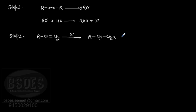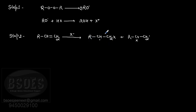First possibility: X joins at the CH2 end and the free radical forms on the other carbon - this gives a secondary free radical. Second possibility: X joins at the other end and the free radical forms on CH2 - this gives a primary free radical. We know that secondary free radical is more stable than primary free radical, so the secondary free radical pathway is preferred.